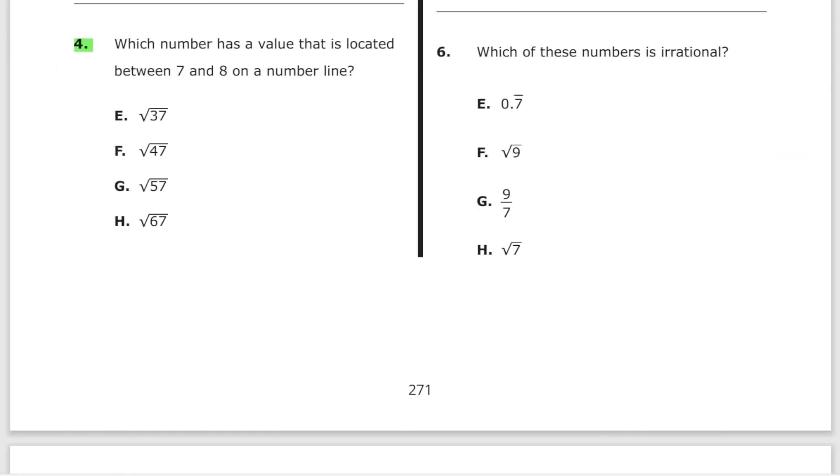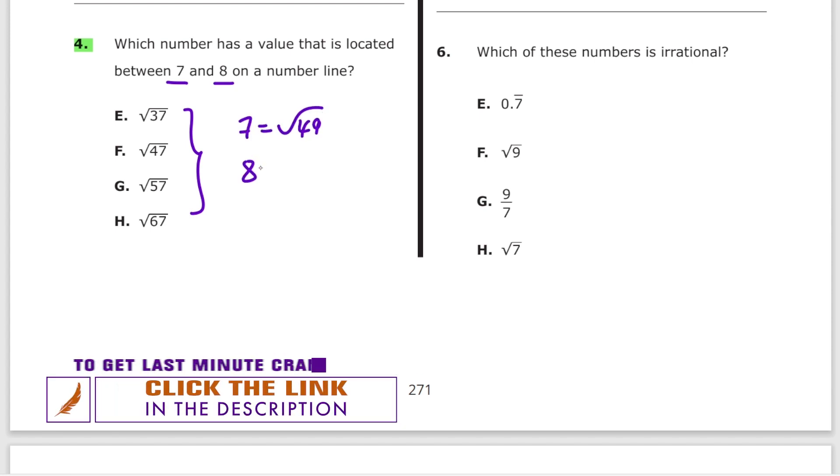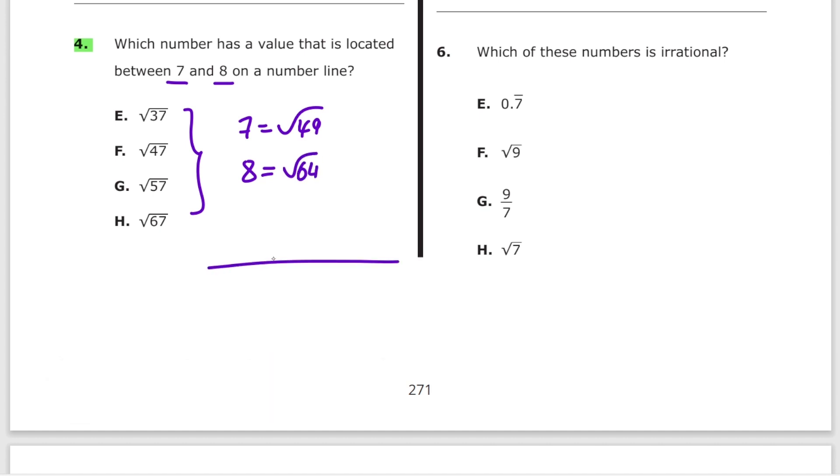Problem number 4. Which number has a value that is located between 7 and 8 on a number line? Look at the multiple choices. They're all square roots. So what we need to do is turn 7 and 8 into a square root. 7 equals square root of 49. 8 equals square root of 64. So we're looking for a value that is somewhere between square root of 49 and square root of 64. E is out. F is out. H is out. The answer is G.